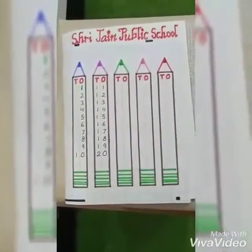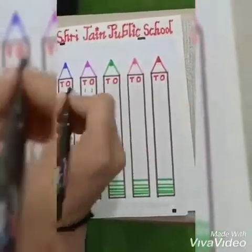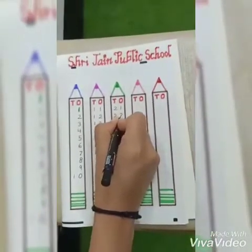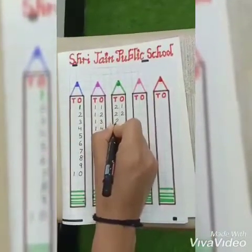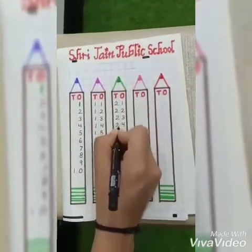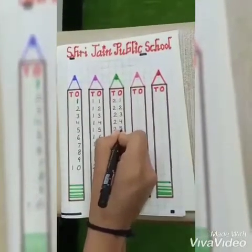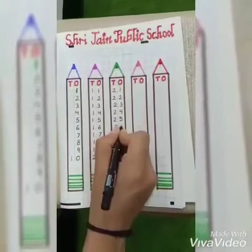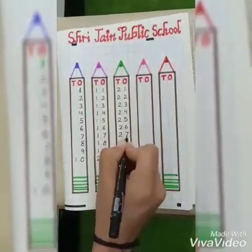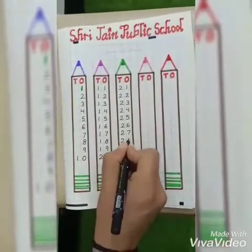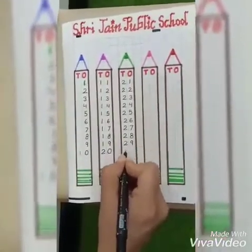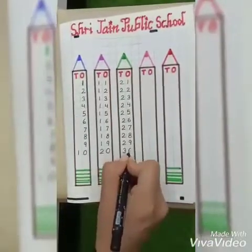Now we move to the next line. 21, 22, 23, 24, 25, 26, 27, 28, 29, 30.